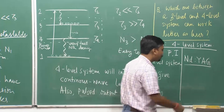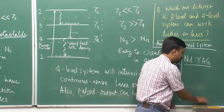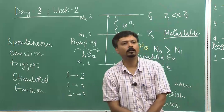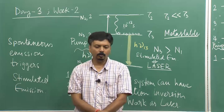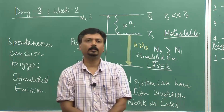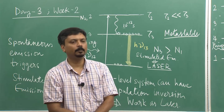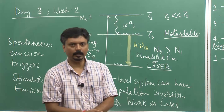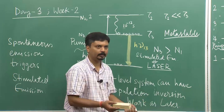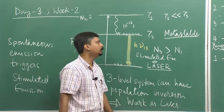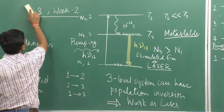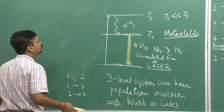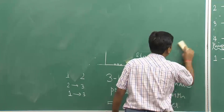I think we have enough fundamental and theoretical background about laser and laser action by now, with which we can start considering the actual practical depiction of a laser. So, how practically can we get a laser? What do you need to form a laser?